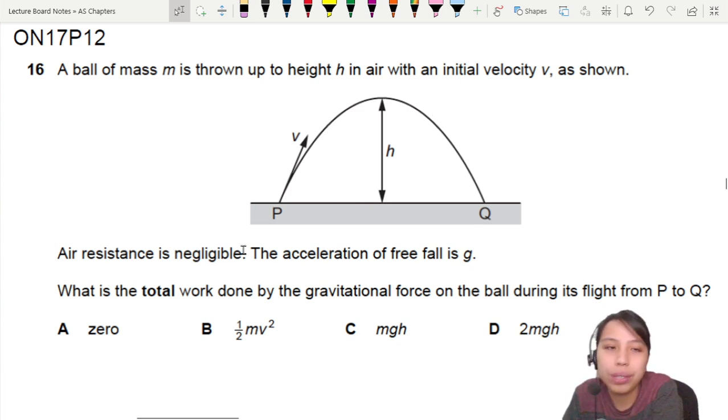Air resistance is negligible. Very good. The acceleration of free fall is G. What is the total work done? By who? By the gravitational force on the ball during its flight from P here all the way to Q.